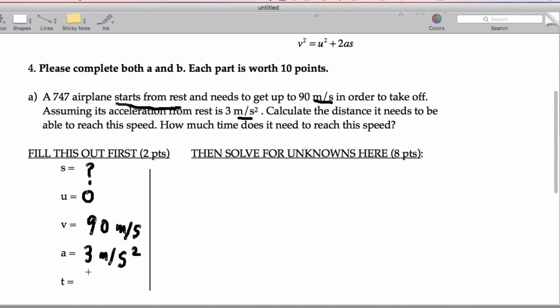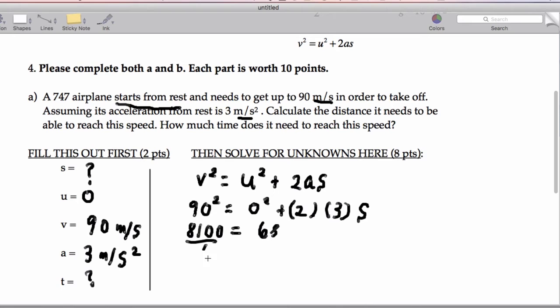So let's go ahead and get the distance. I'll use v squared equals u squared plus 2as. That's going to be 90 squared equals 0 squared plus 2 times 3 times s. That's going to give us 8100 equals 6s.